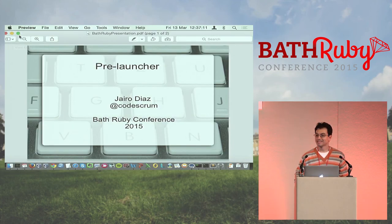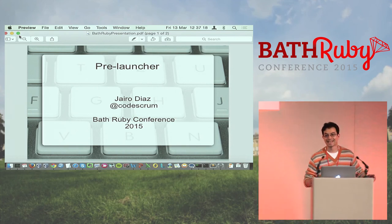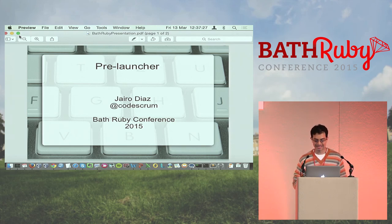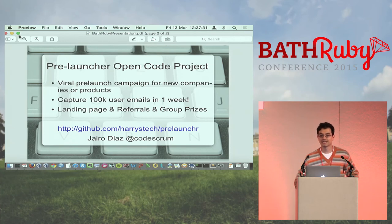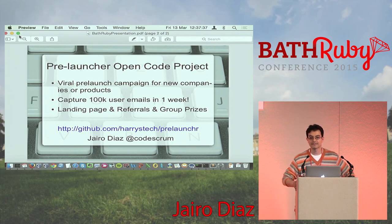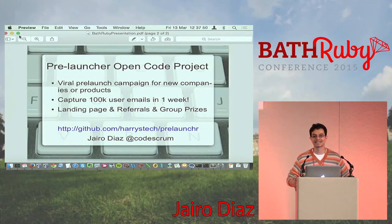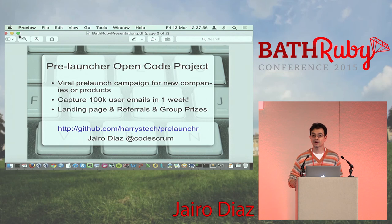Hello everyone. I think it's been an exciting day. That last presentation was mainly about how to read the paper. For those who are learning, it's good to start with something small. In Hacker News there was a piece of code that was quite interesting — mainly used for companies launching their products. It's a pre-launch open source project, mainly used to get 100K users in one week, at least in the US Hacker News environment.